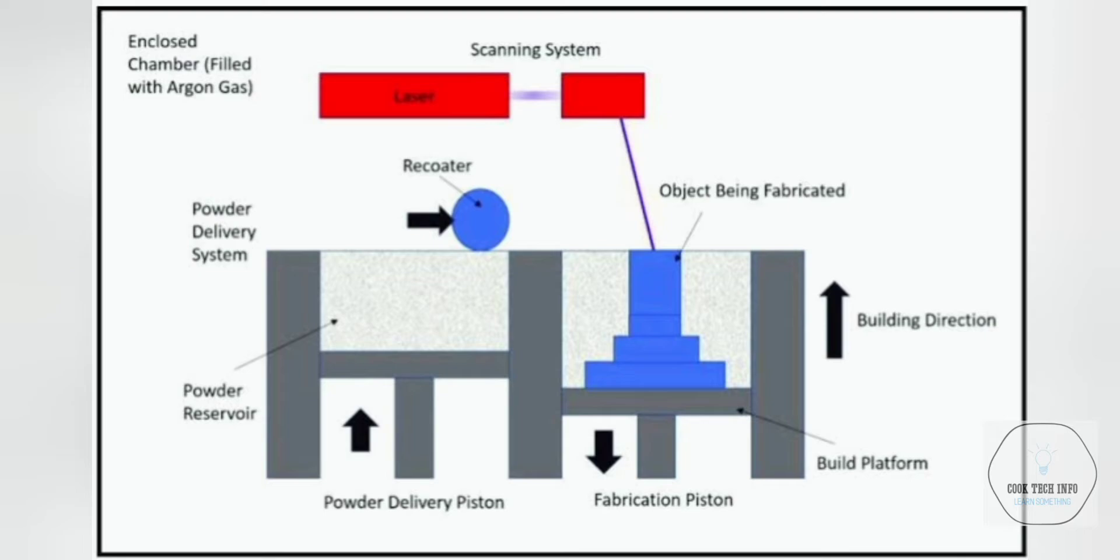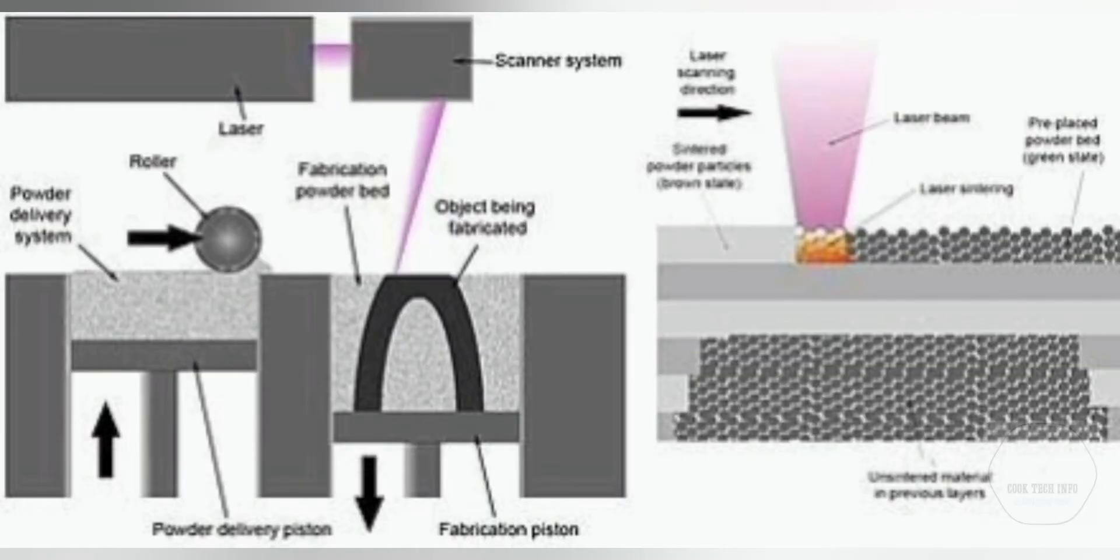rapid prototyping, 3D printing, or additive manufacturing technique designed to use a high power-density laser to melt and fuse metallic powders together. The SLM process has the ability to fully weld the metal material into a solid three-dimensional part.